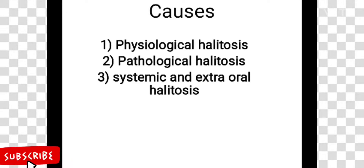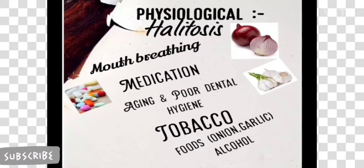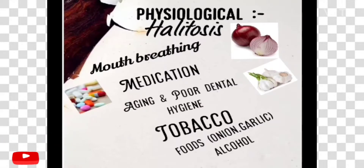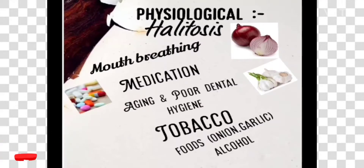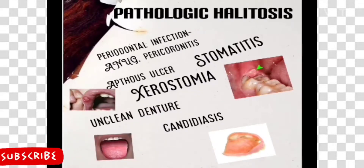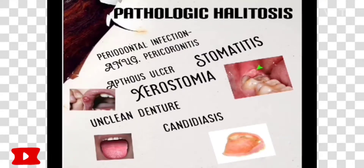Causes for physiological halitosis include mouth breathing, medication, aging, poor dental hygiene, tobacco, foods like onion and garlic, and alcohol consumption. Pathological halitosis is caused by periodontal infection, pericoronitis, aphthous ulcer, stomatitis, and xerostomia.